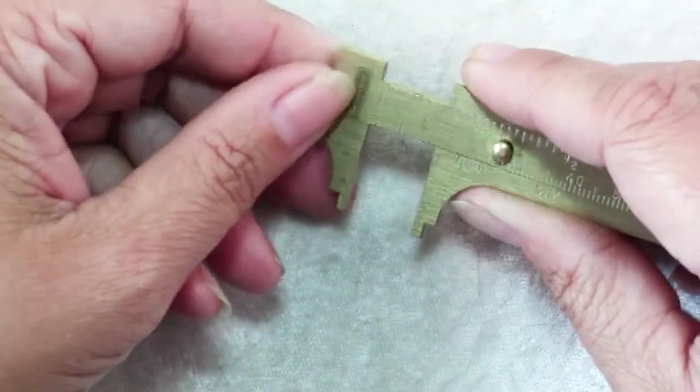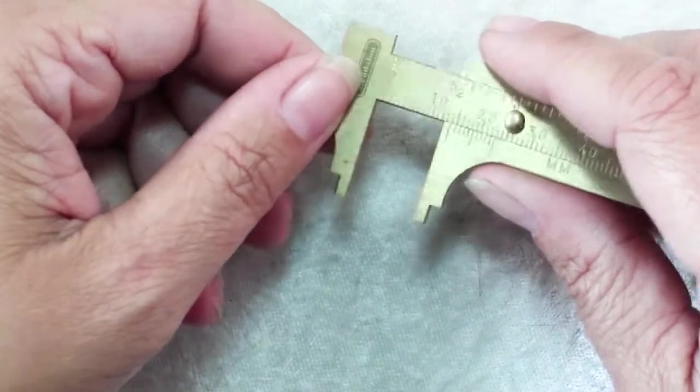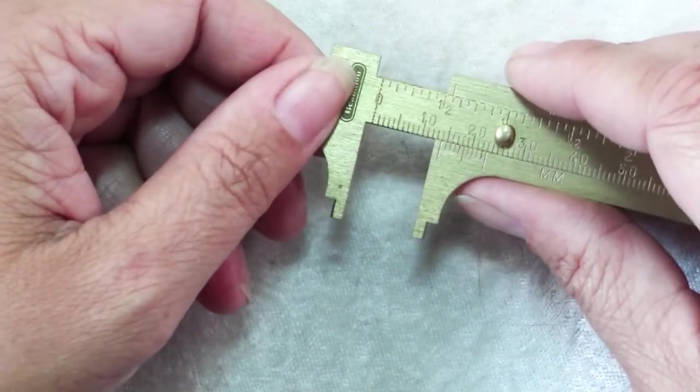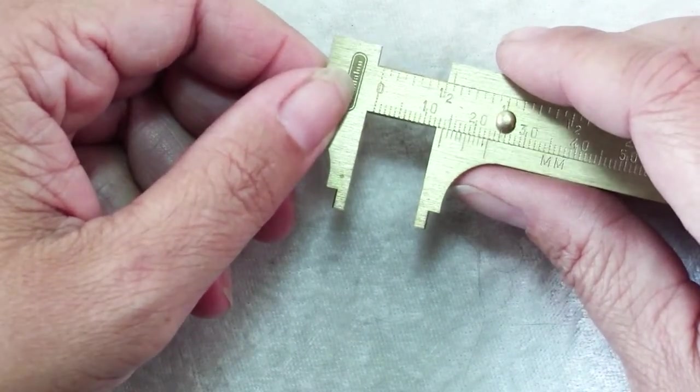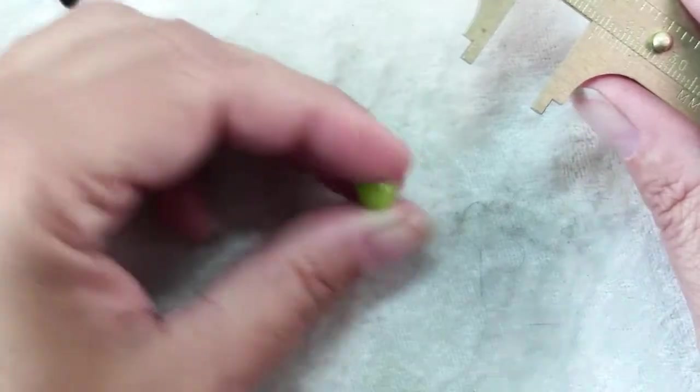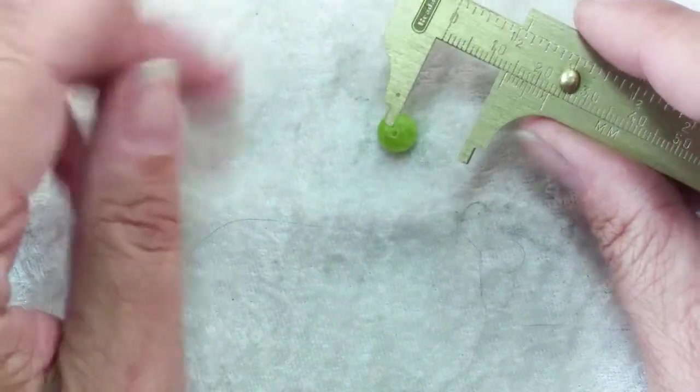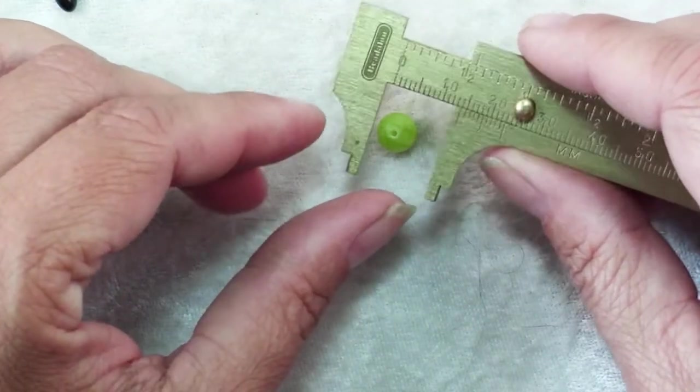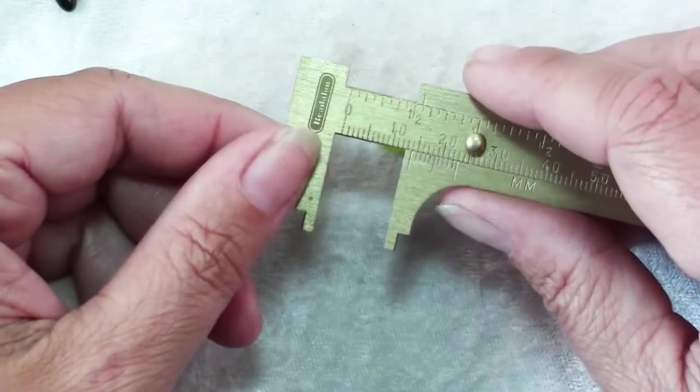One thing I strongly recommend, especially if you're in the U.S. and just getting into jewelry making, is to acquaint yourself with millimeters. It's a lot easier than dealing in fractions of an inch. Most beads, wire, and smaller components come with millimeter dimensions, and you'll be much happier using millimeters and centimeters.